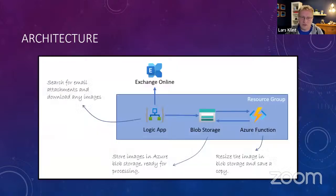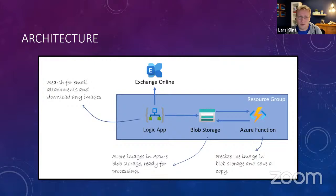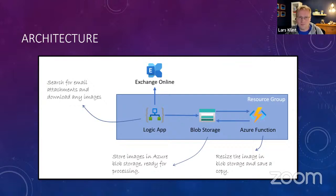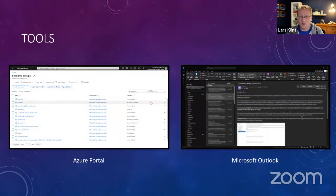There aren't many slides — most of this is going to be in the portal. Here's the architecture we're going to be building. It'll center around a Logic App. The logic app is going to check my Exchange Online email account, take images that come in on email, and put them in Blob Storage. There'll be an Azure Function that monitors that Blob Storage, and whenever a new image comes in it'll resize it and put it back in Blob Storage so the imaginary website can use those images. We're going to use the Azure portal and Microsoft Outlook.